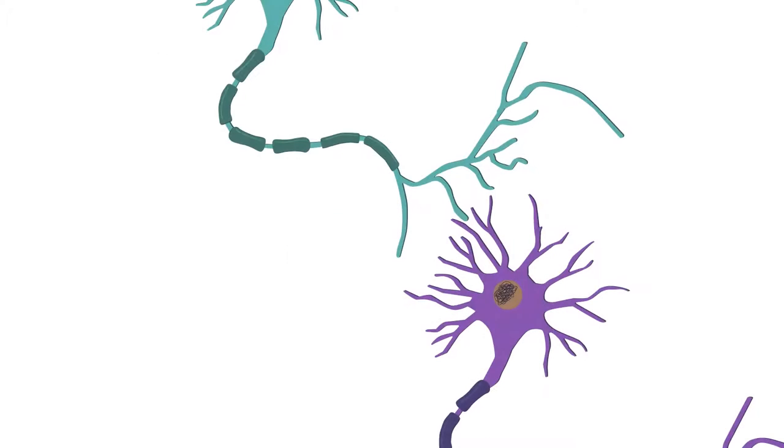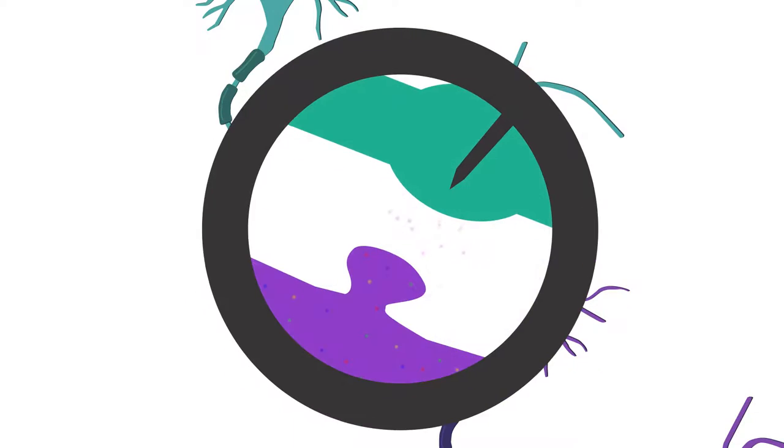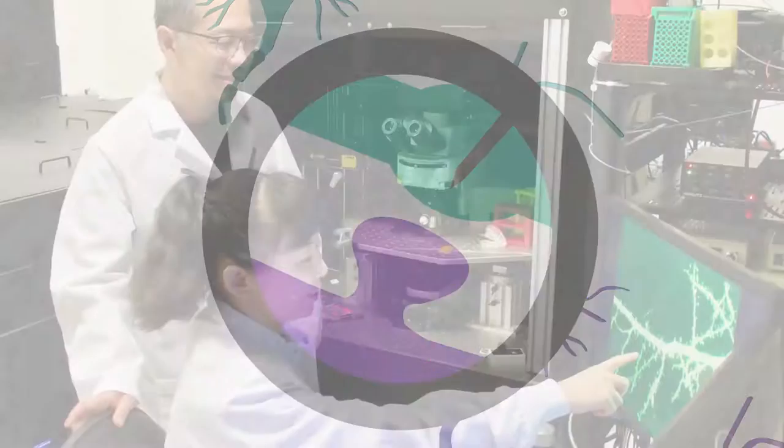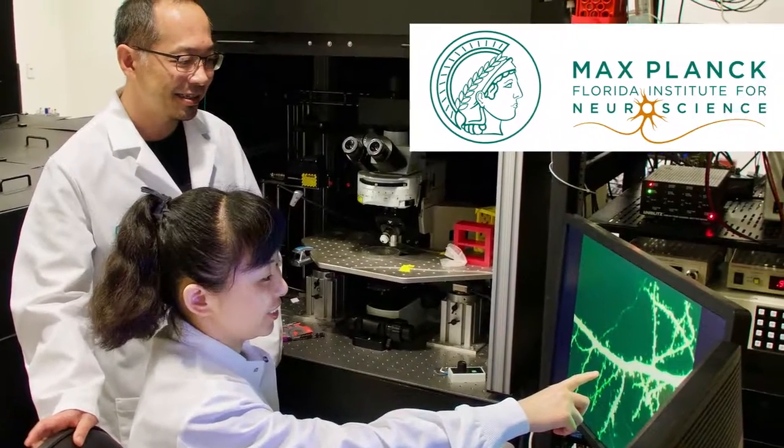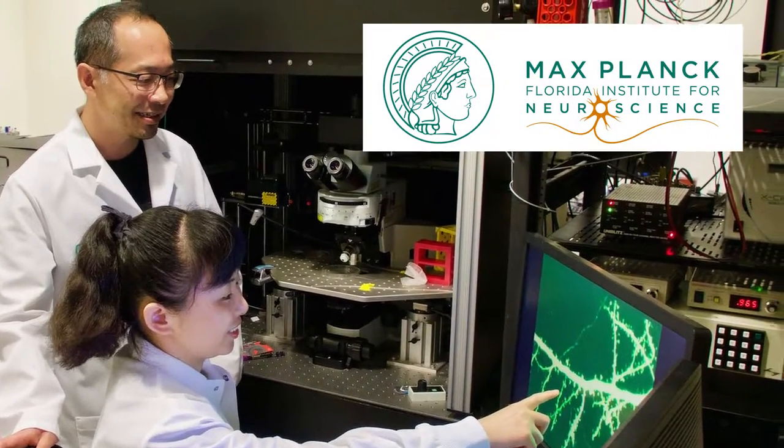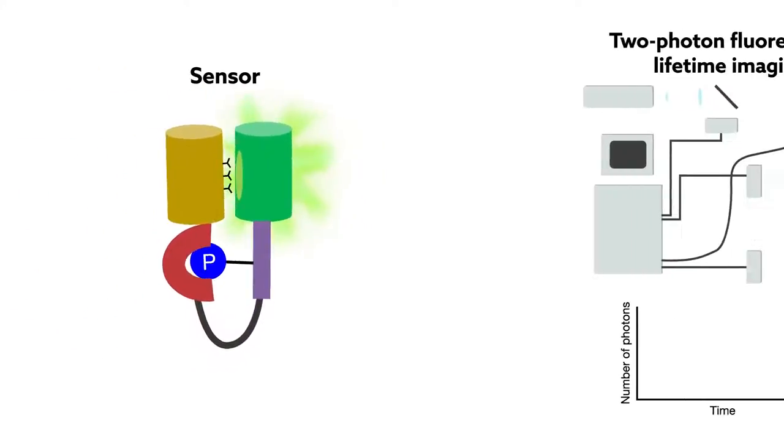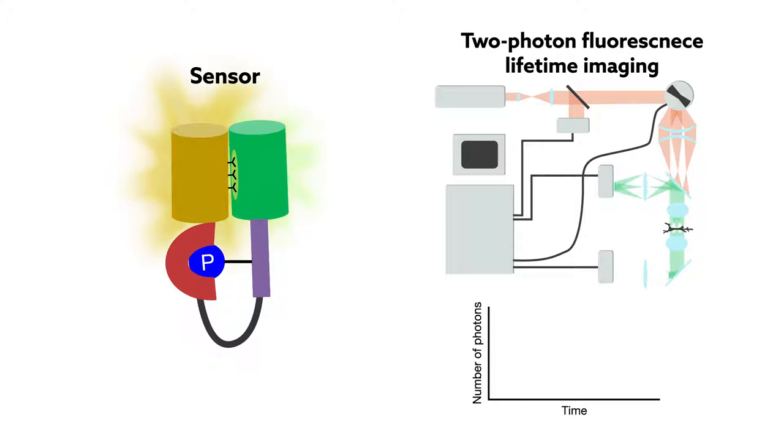Until recently, however, the protein signals that cause these tiny structural changes were too small to measure with available imaging methods. But researchers at the Max Planck Florida Institute for Neuroscience created ultrasensitive sensors and revealed the activity of two of the proteins that write memories into neural circuits in the brain.